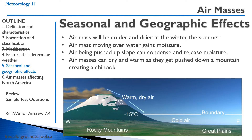In the winter, a given air mass will be colder and drier than the same air mass will be in the summer. If we move an air mass over water, it will gain moisture. And if we push the air mass up a slope, the water vapor will condense and release the moisture. An air mass can also be dry and warm as it gets pushed down a mountain, creating a chinook.